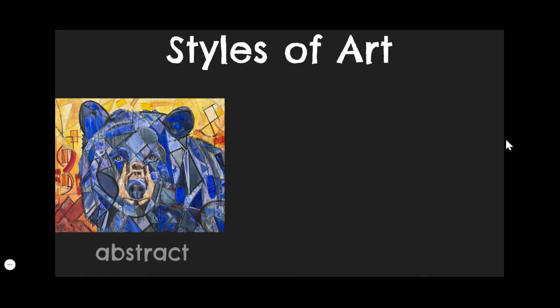The next category is called abstract art. This sometimes gets considered as anything that's not realistic, but we like to separate it a little bit more. Our definition for abstract is art that you can tell what it is — you can recognize something in it, but it doesn't look real. In this case, you can tell that's a bear, but obviously it doesn't look like a real bear. This is not a photograph and there's no mistaking it, but you can tell it's a bear. Therefore, that makes it abstract.